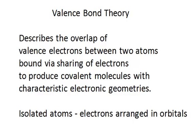Valence bond theory describes the overlap of valence electrons between two atoms. The two atoms are bound via the sharing of the electrons to produce covalent bonds and leading to covalent molecules with characteristic electronic geometries.